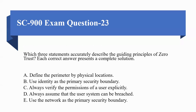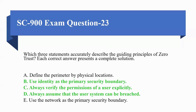Next question: Which three statements accurately describe the guiding principles of Zero Trust? Each correct answer presents a complete solution. Options are: A) Define the perimeter by physical location, B) Use identity as the primary security boundary, C) Always verify the permissions of a user explicitly, D) Always assume that a user system can be breached, E) Use the network as the primary security boundary. The correct three options are B, C, and D.